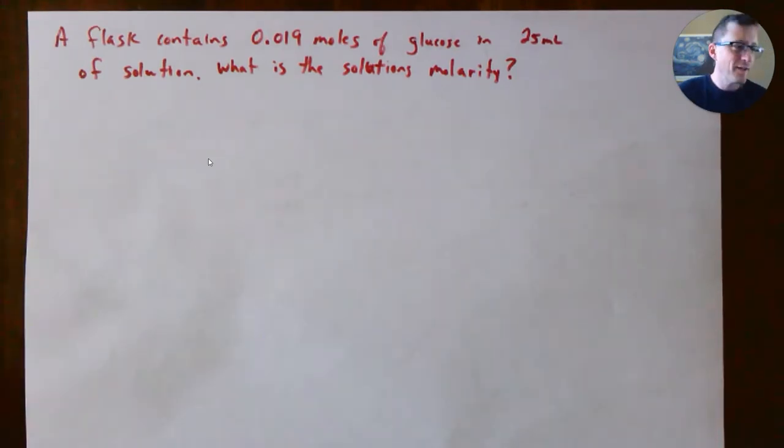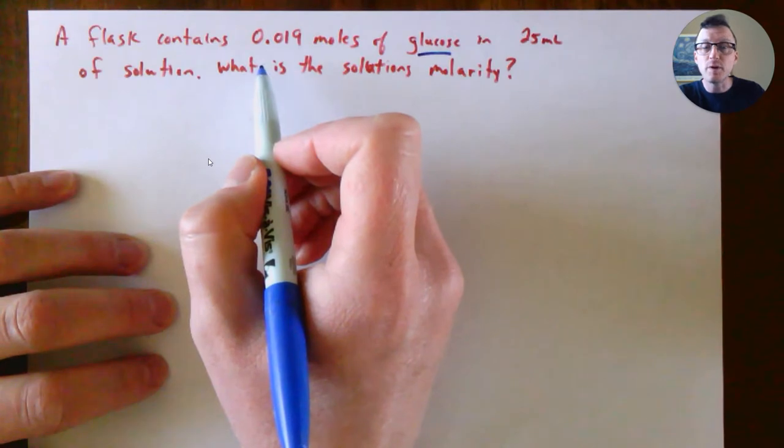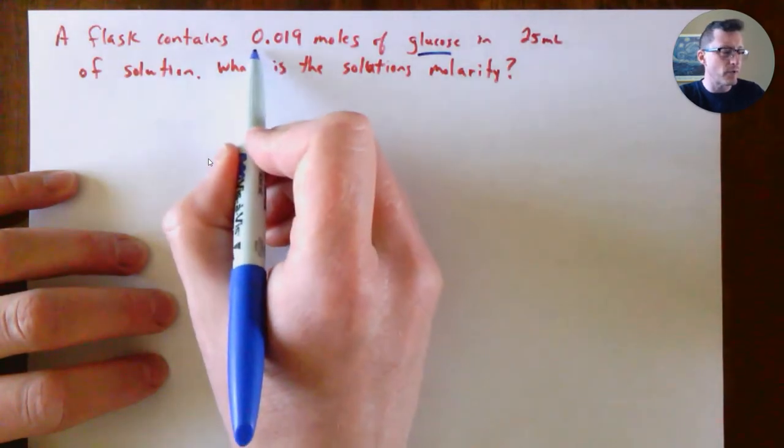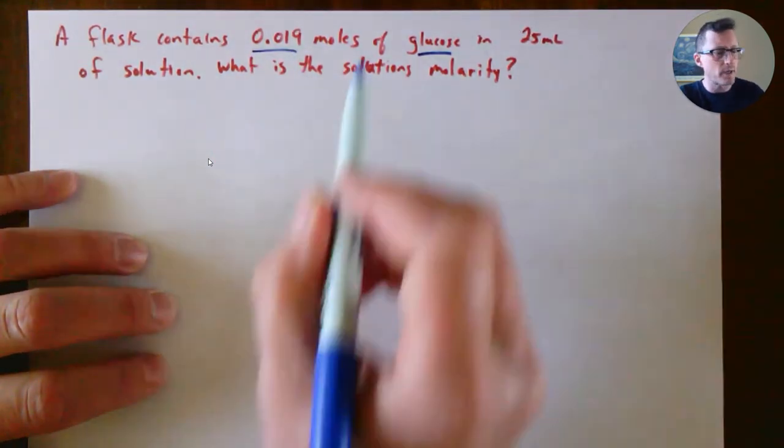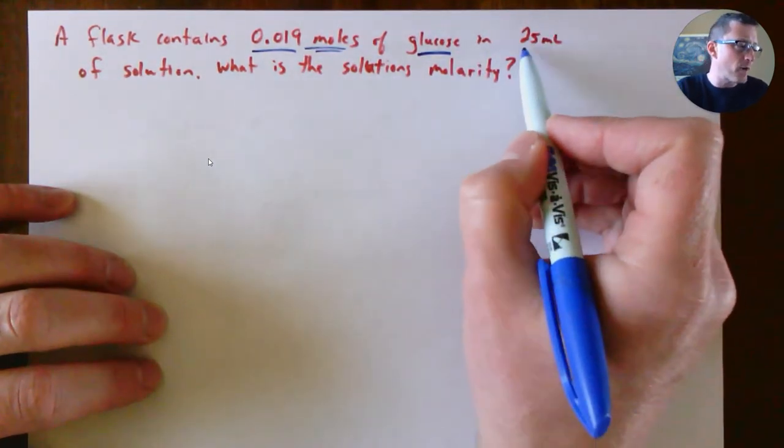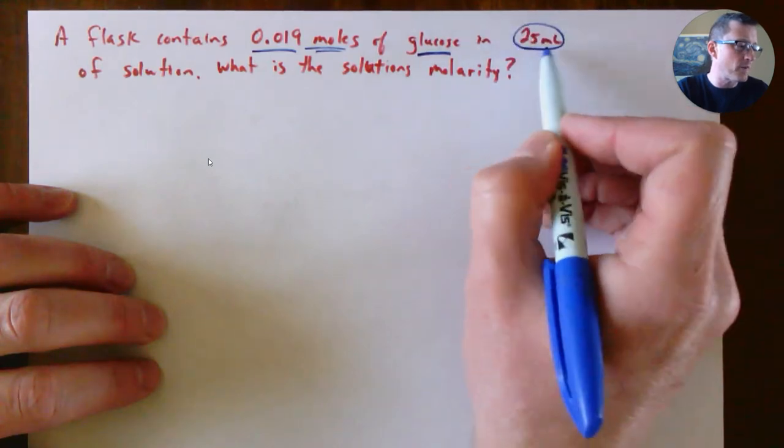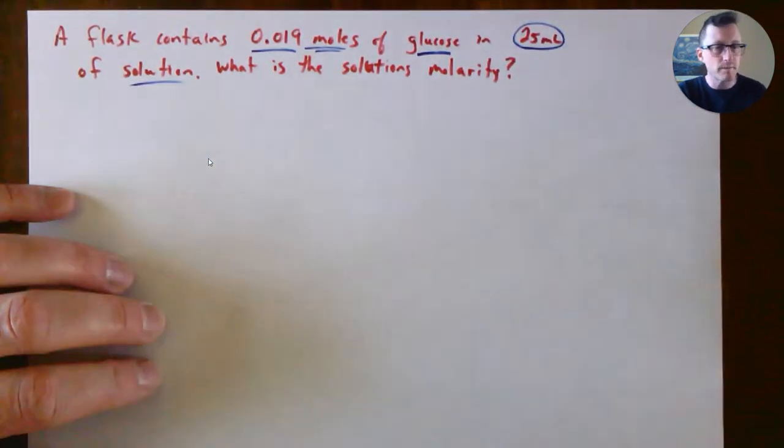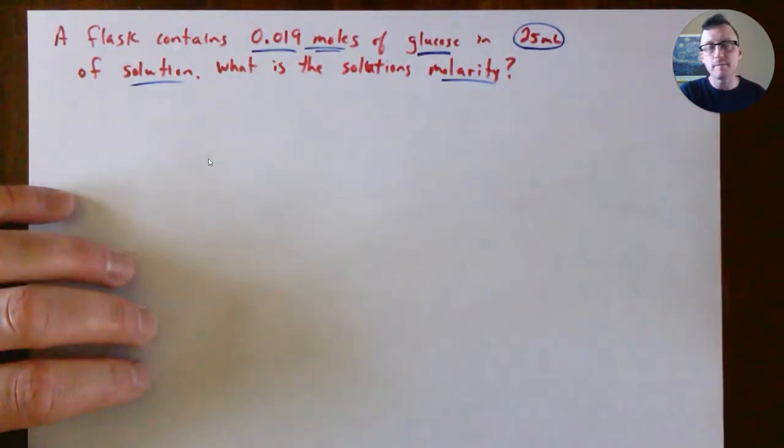Welcome back. We're going to look at how to do some molarity calculations. We have a sample of glucose with 0.019 moles of glucose in enough water to make 25 milliliters of solution, and we want to know what is the molarity.